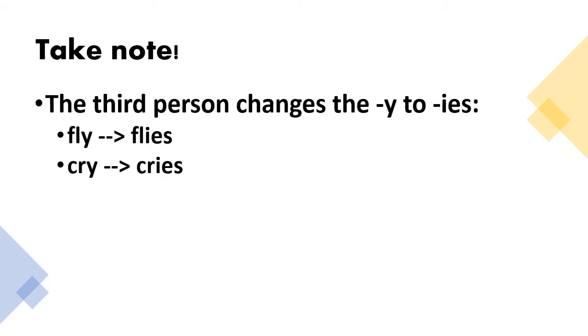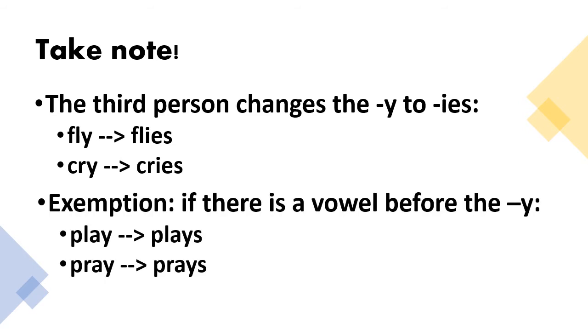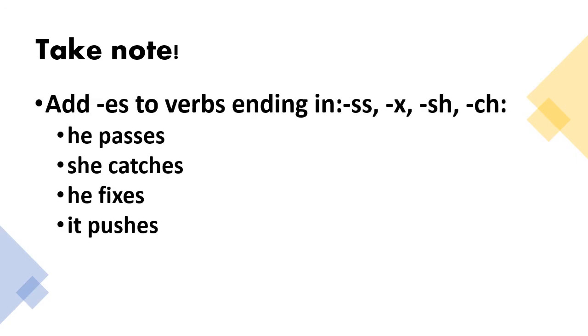If the verb ends in y and it is in the form of third person, the y will be changed to ies. But there is always an exception. If there is a vowel before y, just add s at the end. Remember to add es to verbs ending in ss, x, sh, or ch.